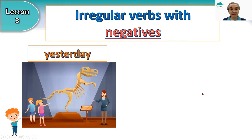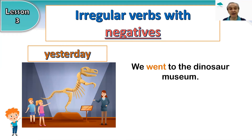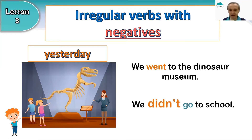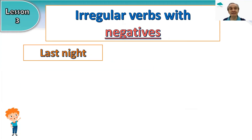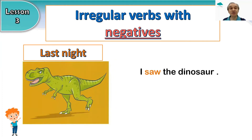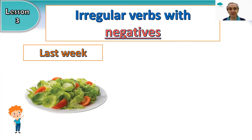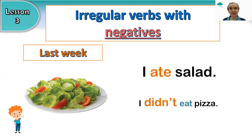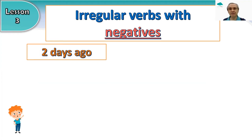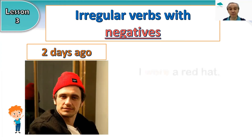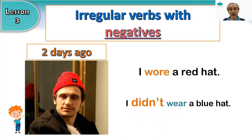Yesterday — what did we do yesterday? We went to the dinosaur museum. We didn't go to school. Last night — look at the picture — I saw the dinosaur. I didn't see the fish last week. Look at the picture — last week, I ate salad. I didn't eat pizza. I'm very healthy last week. Two days ago, I wore a red hat. I didn't wear a blue hat.